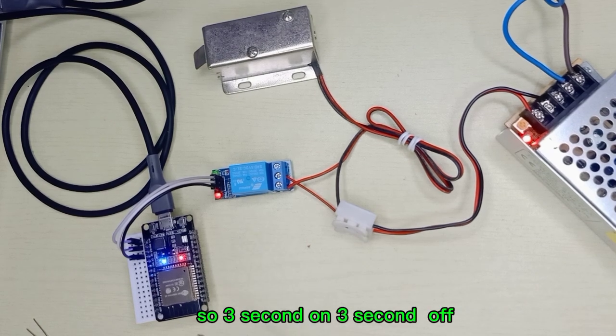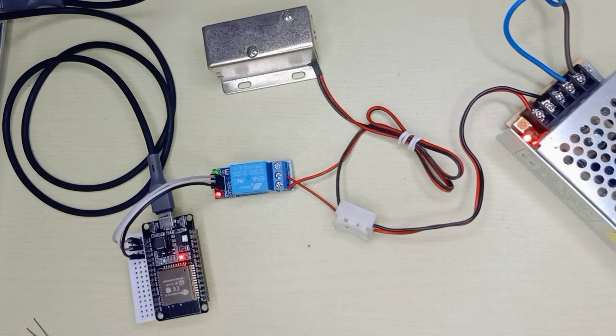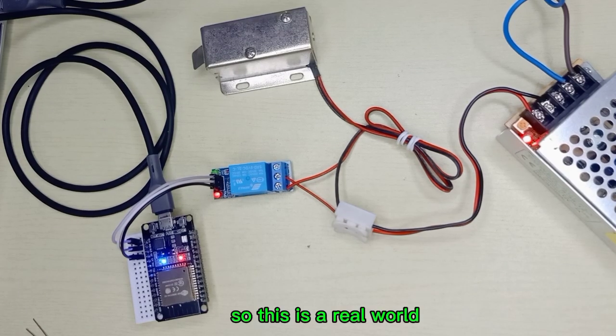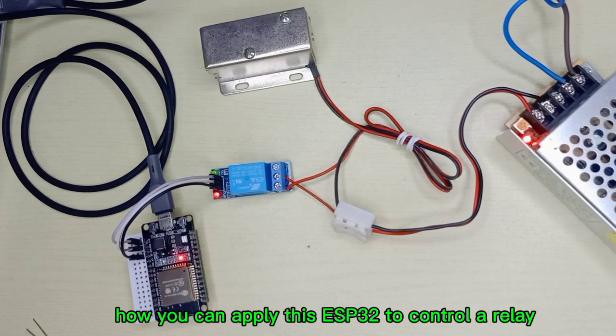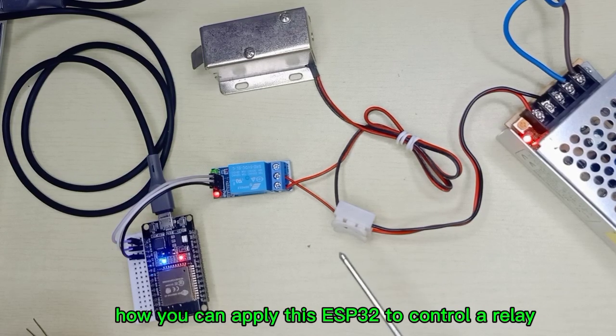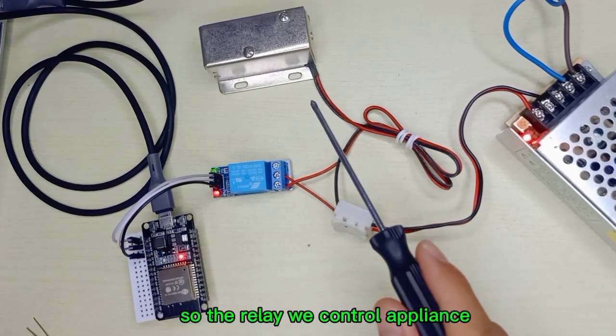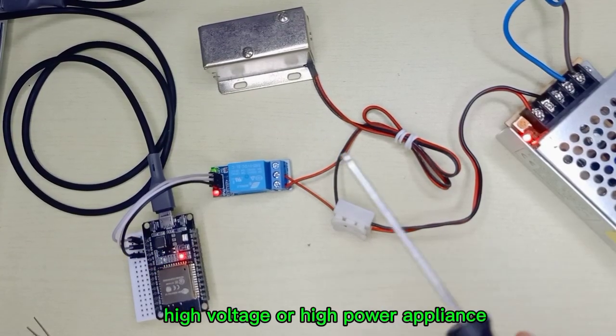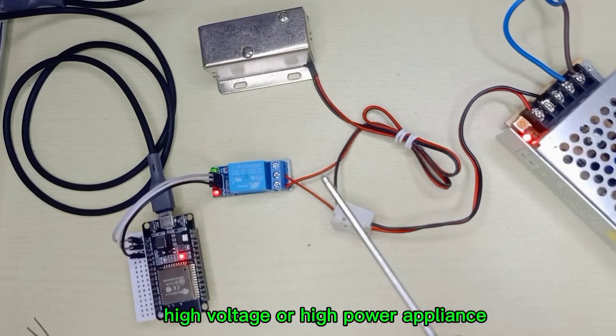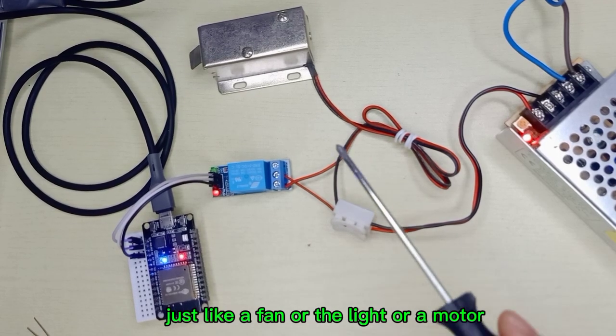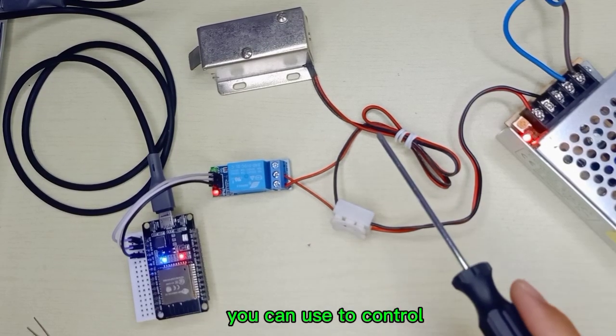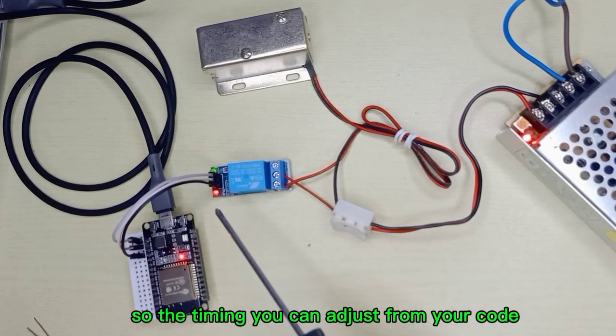So 3 seconds on, 3 seconds off. This is a real world application of how you can use ESP32 to control a relay. The relay controls the appliance. This is not only for solenoid - you can control high voltage or high power appliances like a fan, light, or motor. As long as the current is less than 10 ampere you can use it to control. The timing you can adjust from your code.